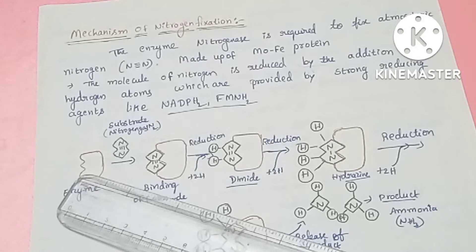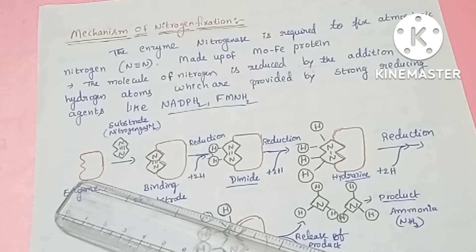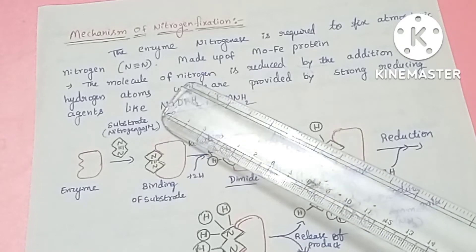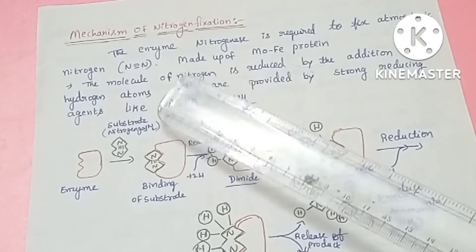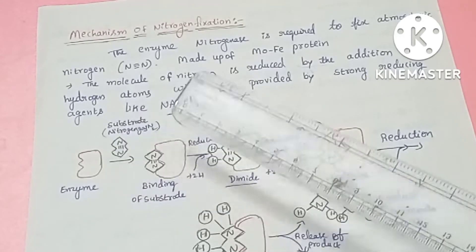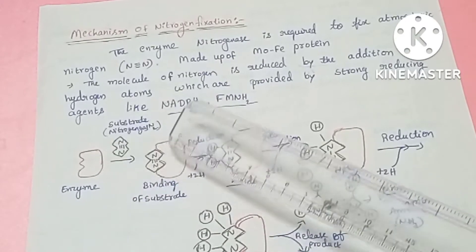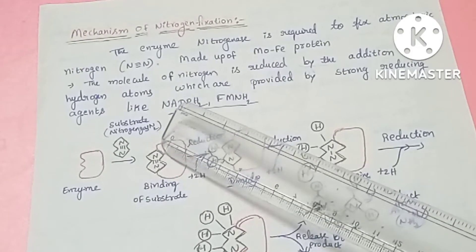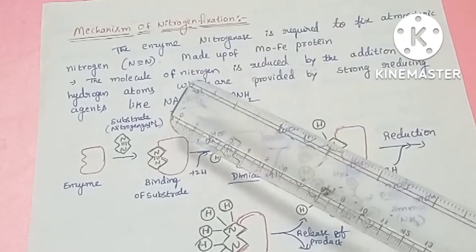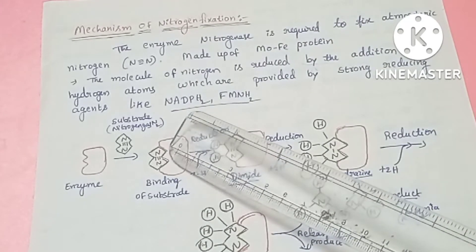What is the enzyme? Nitrogenase is the enzyme. This enzyme is active at the active site, and it helps to process the substrate, which is nitrogen gas. Nitrogenase binds nitrogen as substrate at its active site. There are 3 covalent bonds in the nitrogen molecule.